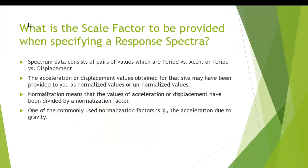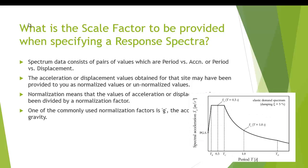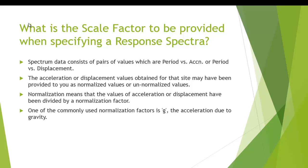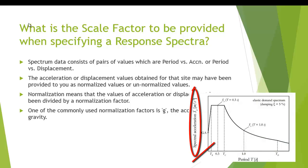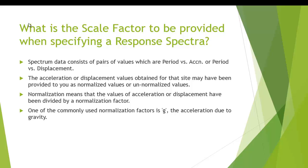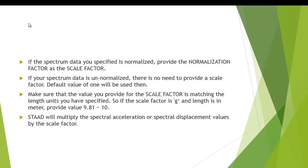So you may be wondering why we are providing a scale factor while performing a response spectrum analysis. The spectrum data consists of pairs of values which may be a period versus acceleration or a period versus displacement. The acceleration or displacement values obtained from the site may be normalized or un-normalized values. The normalization means that the value of acceleration or displacement have been divided by a normalization factor. One of the most commonly used normalization factor is G, the acceleration due to gravity. Suppose the data provided by you is normalized, you have to multiply the spectrum data with a normalization factor as a scale factor. If your spectrum data is un-normalized, there is no need to provide a scale factor. The default value of 1 will be used in that case.